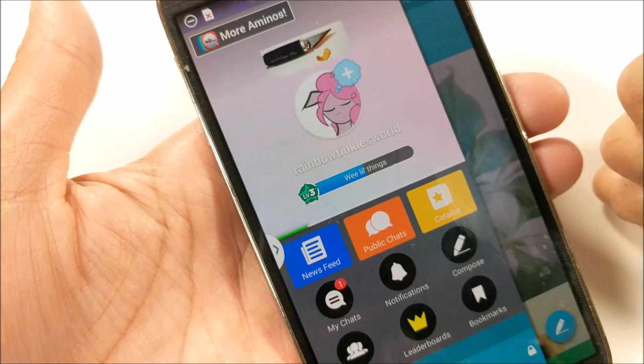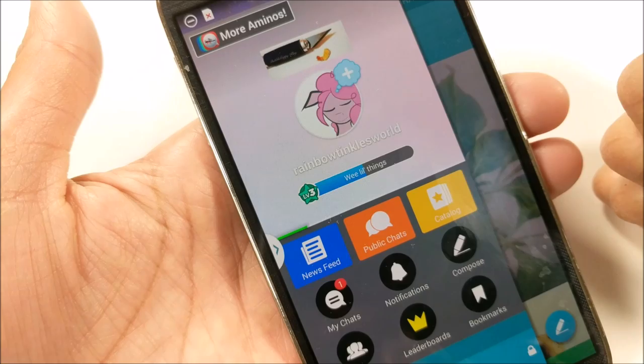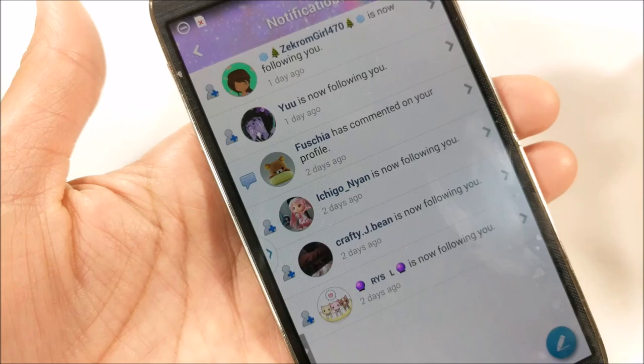And I can click on my profile. And by the way, guys, mine is Rainbow Tinkles World if you want to follow me. And I can see my chats, any news, and also my notifications including my followers.